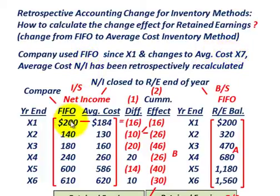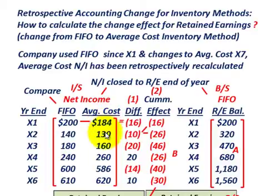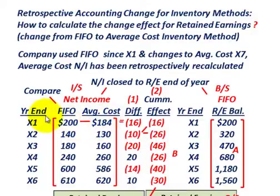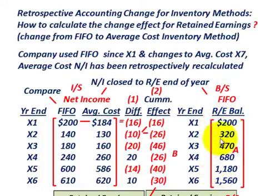We're given six years of net income, looking at FIFO versus average cost. The average cost net income has been retrospectively recalculated for us. These net income amounts for each method are year-end amounts. We're also given the retained earnings balance for the FIFO inventory method, which we've been using for the past six years.